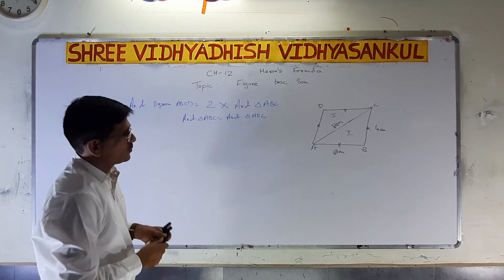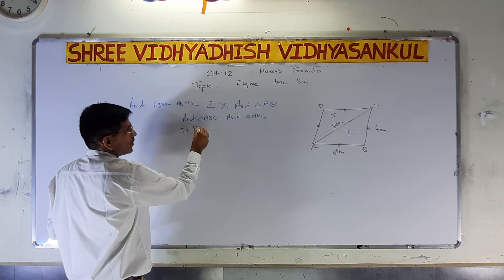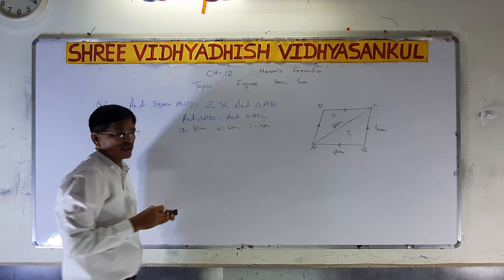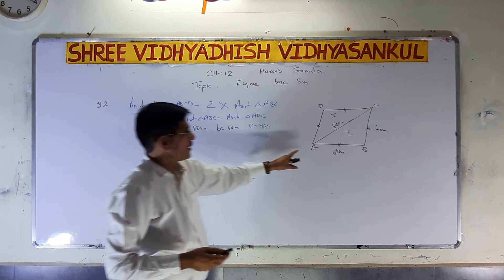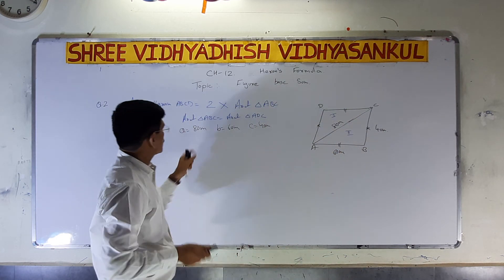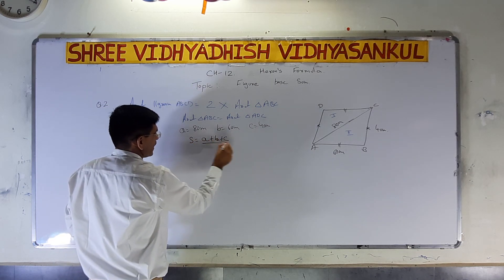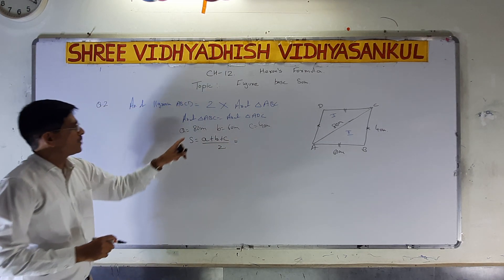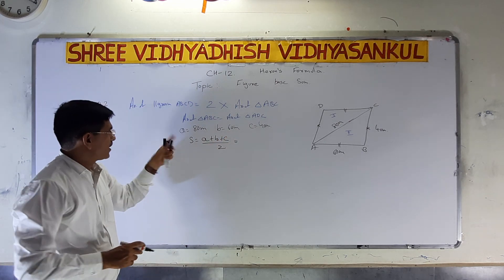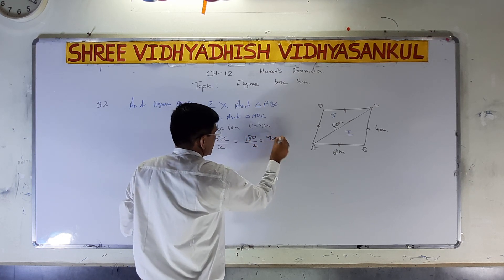Now, what is the first target? We have to find the values for Heron's formula. A is equal to 80 meters, B is equal to 60 meters, and C is equal to 40 meters. We have to find S, which is A plus B plus C divided by 2. That is 80 plus 60 plus 40 divided by 2, which gives 180 divided by 2 — that is 90 meters.